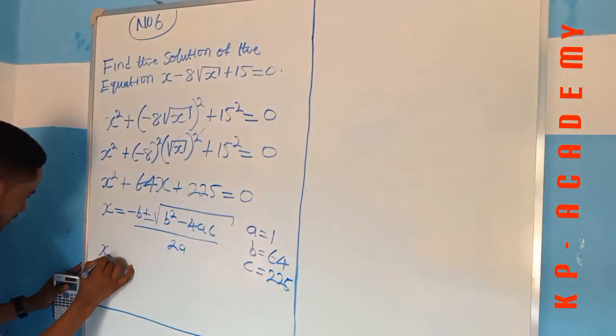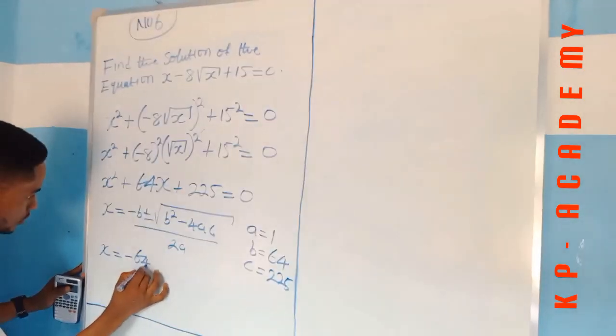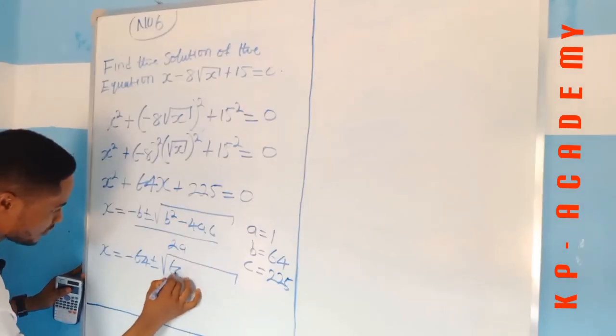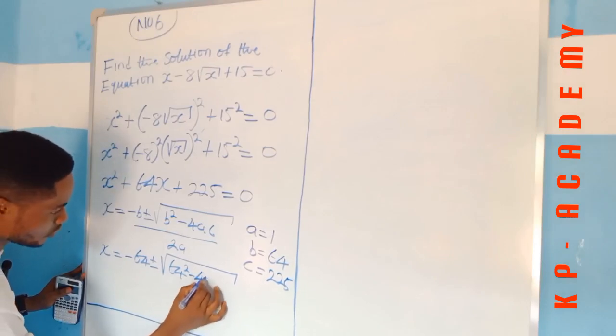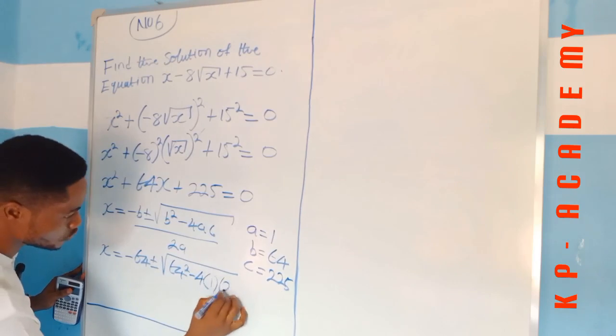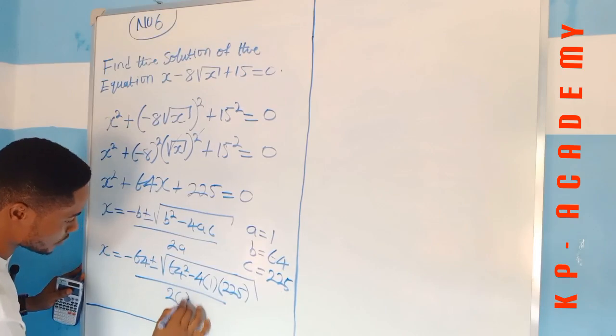Hence, we have x is equal to minus 64 plus or minus square root of 64 squared minus 4 into 1 into 225 all over 2 into 1.